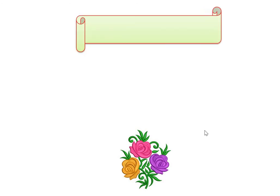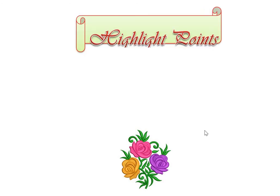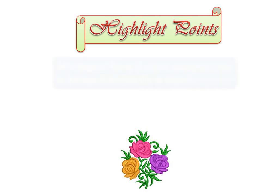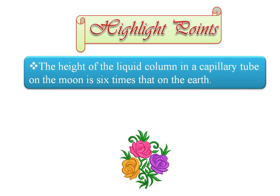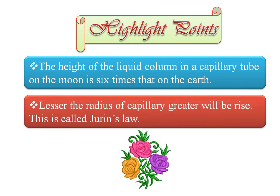Today's highlight points, important for entrance exams: the height of the liquid column in a capillary tube on the moon is six times that on the earth. Also, lesser the radius of the capillary, greater will be its rise — this is called Jureen's Law. In the next video, we discuss a new point of this topic.